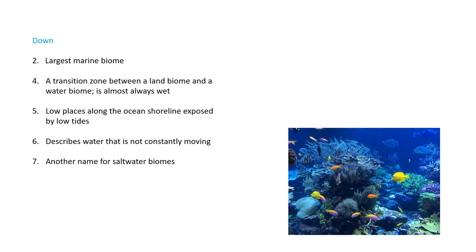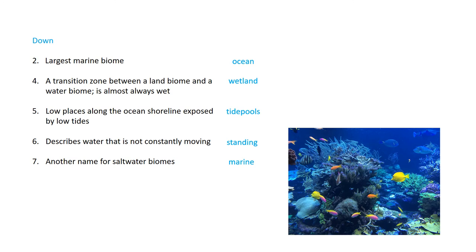Our questions going down. Number two, the largest marine biome is called the ocean. Number four down, a transition zone between a land biome and a water biome that is always wet — that's a wetland. Five down, low places along the ocean shoreline exposed by low tides — that's called a tide pool. Here in Florida we have tide pools. Those tide pools will catch hermit crabs, starfish, and little tiny fish — anything that's gotten caught up in that shallow area exposed along the shoreline. Six down describes water that is not constantly moving — that's called standing water. Number seven down, another name for saltwater biomes is marine. Marine and saltwater biomes can be used simultaneously.